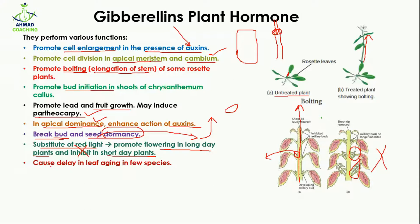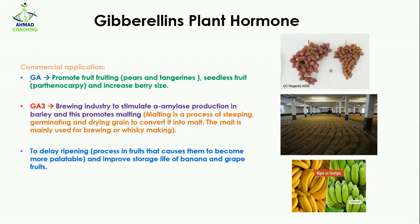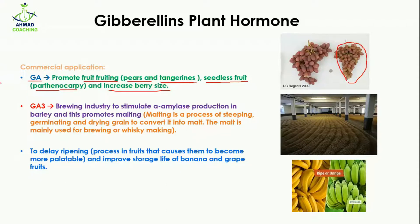Gibberellin also causes a delay in leaf aging, meaning it slows down leaf senescence. There are many commercial applications of gibberellins — for example, GA hormone promotes fruiting in pears and tangerines, promotes seedless fruits by parthenocarpy, and increases berry size. You can see here that grape size is very small without treatment, but when GA hormone is applied, the size of the grape increases.